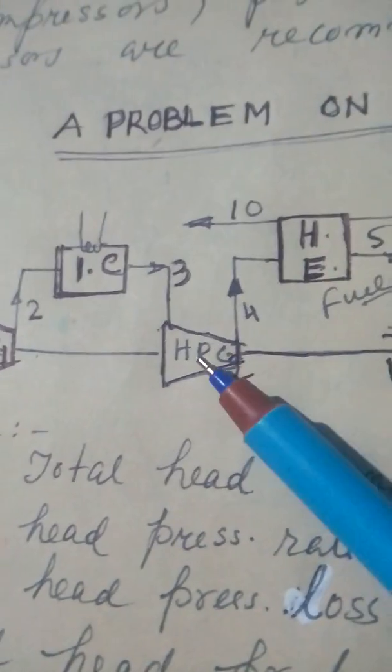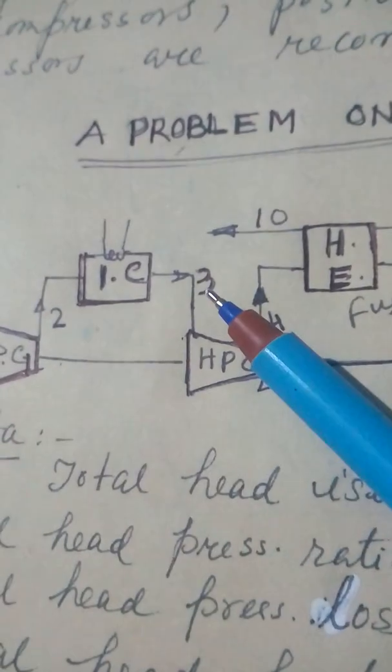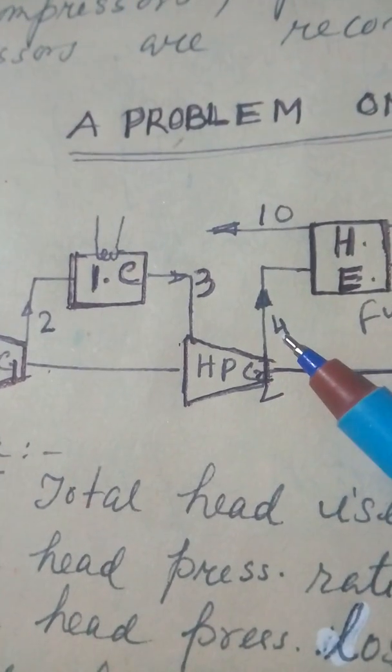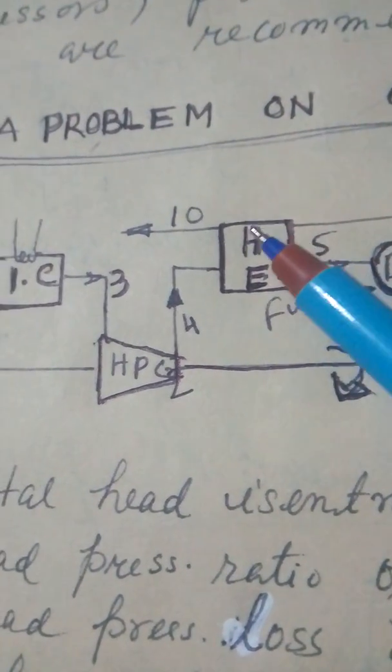Then, high pressure compressor 2, 3 to 4. Then, 4 to 5 is heat exchanger.